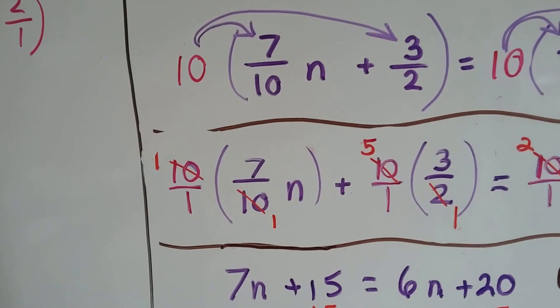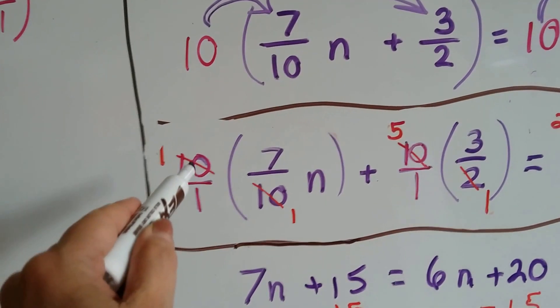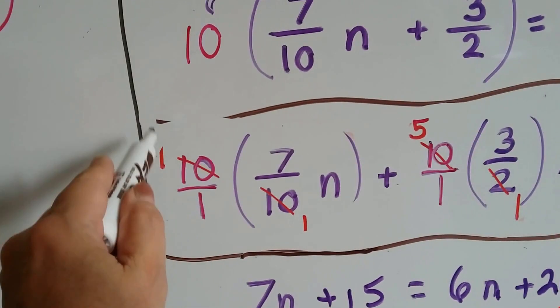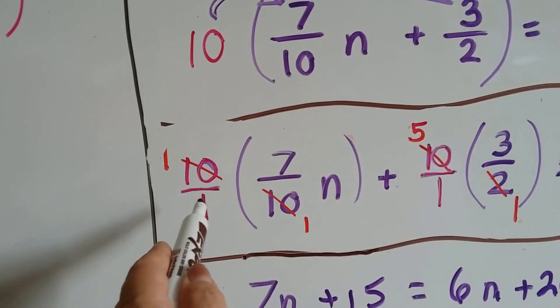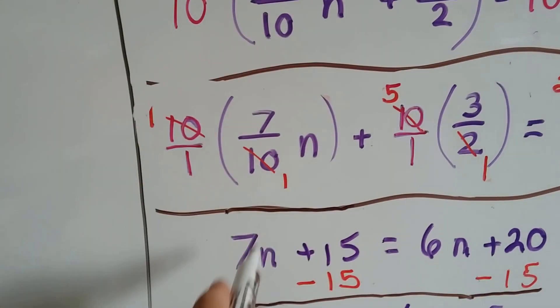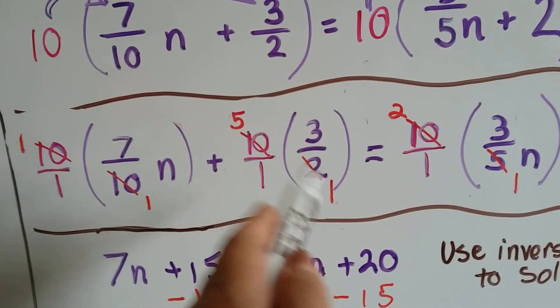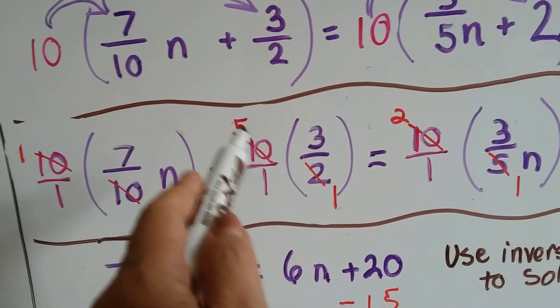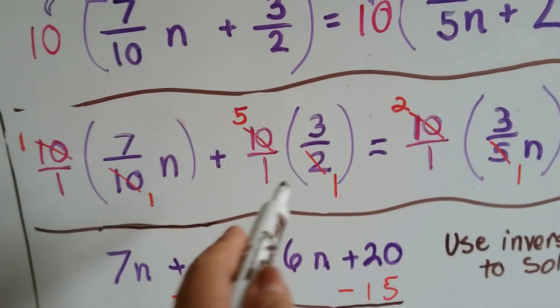For this first one, I just put it over 1 to make it easier to see how I'm multiplying the fraction, and this 10 and this 10 can cancel each other out as a 1. There's one 10 here and one 10 here, so now I don't have to reduce so much. 1 times 7 is 7 over a 1. 7 over 1 is 7 as a whole number with an n variable. Then we have 10 over 1 times 3 halves. The 2 and the 10 cancel out as a 1 and a 5. 5 times 3 is 15 over 1. 15 over 1 is 15.